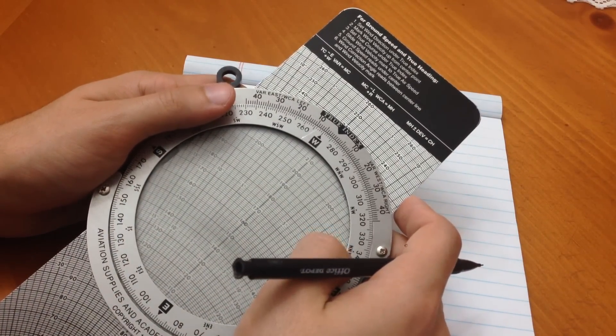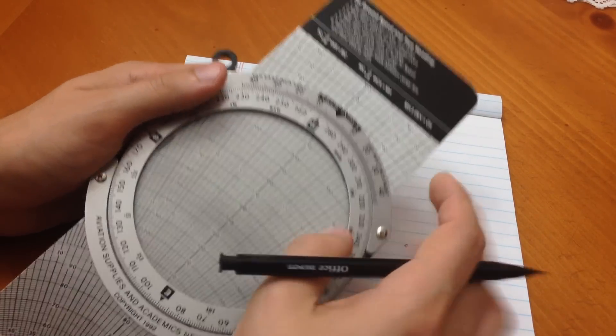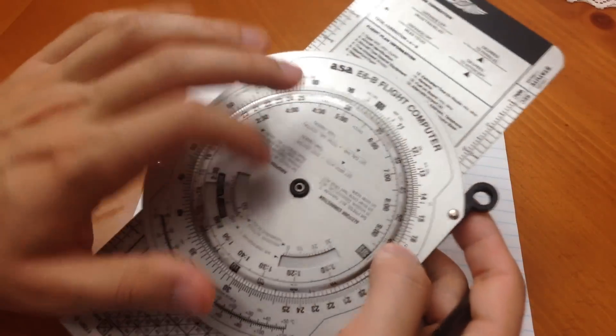We're going to go ahead and take a look at the back of the E6B. This one is made by ASA, and it's very nice. It's the metal one.